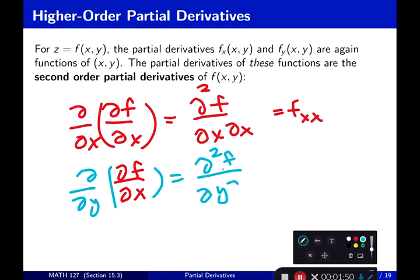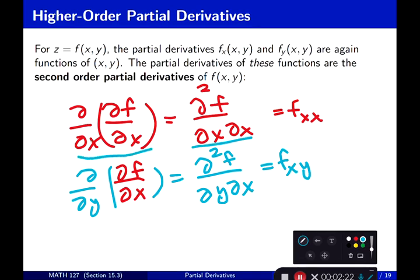Then the derivative is with respect to y, then respect to x. In the differential notation, the first derivative taken — with respect to x — should be closest to f, and then the partial with respect to y follows. This notation follows the order outer-inner: the partial closest to f is the one taken first, so x appears underneath f first, then y.